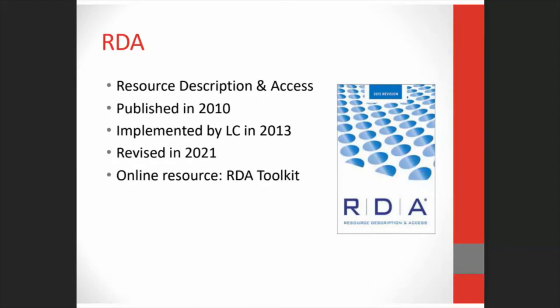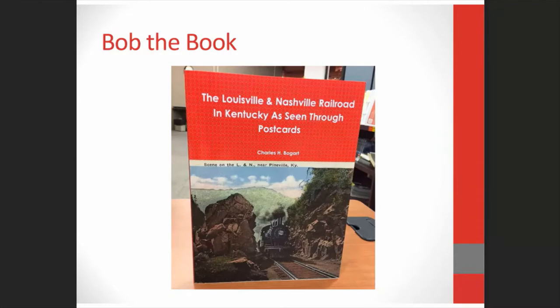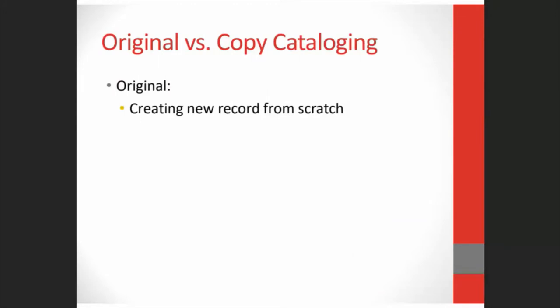Now that we've had a brief history on cataloging and an introduction to the rules, I have someone to introduce to you. This is Bob the Book, and Bob has appeared at your library and we're going to follow him on his journey to your library collection. The first step in Bob's journey is to decide what type of cataloging we would need to do. There are two kinds of cataloging: original cataloging and copy cataloging.